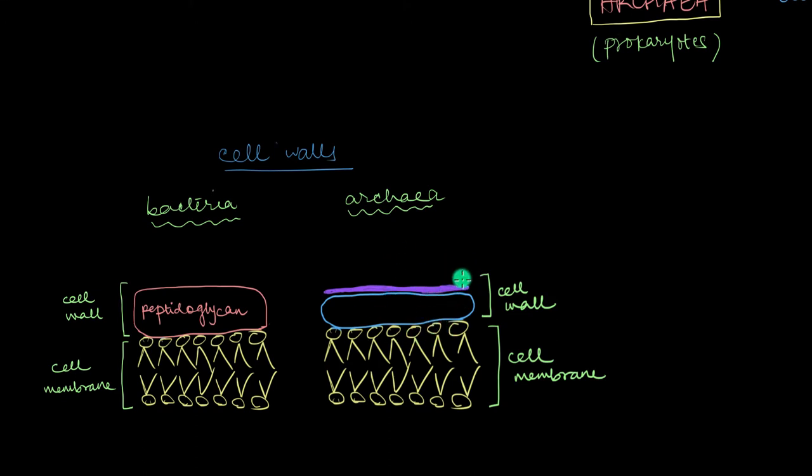Then what are Archaea cell walls made up of? Well, different Archaea cell walls have different chemical compounds or chemical components in them. One such component is something called pseudo-peptidoglycan. But this has only been found in some methanogens, which is a type of Archaea. We'll talk more about methanogens in some time.